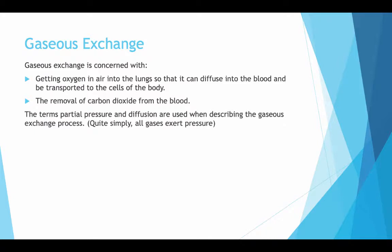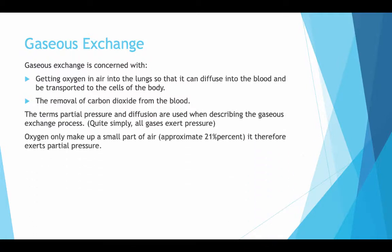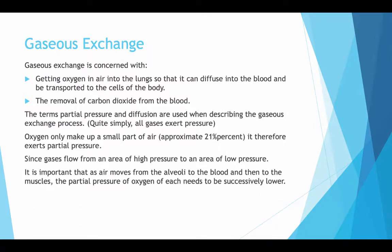The terms partial pressure and diffusion are used when describing the gaseous exchange process. Quite simply, all gases exert pressure. Oxygen only makes up a small part of air, so it exerts partial pressure. Since gases flow from an area of high pressure to an area of low pressure, it is important that air moves from the alveoli to the blood and then to the muscles, with the partial pressure of oxygen successively lower at each stage.